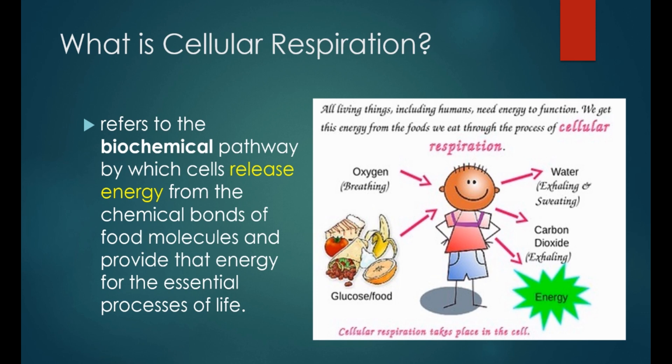Heterotrophs cannot make their own food, so we must eat or absorb food produced by plants. This energy from food cannot be directly used by cells, so cells have to convert the energy stored in nutrients into a more usable form known as adenine triphosphate or ATP.